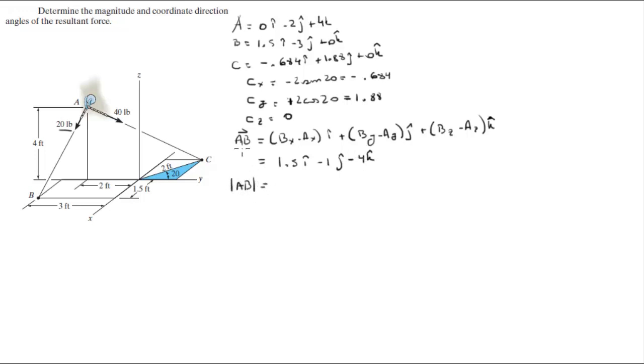Then you need to find the magnitude of this vector and you do so by doing the square root of the X component plus the Y component plus the Z component. When you plug these numbers in you're gonna get that it's equal to 4.387.